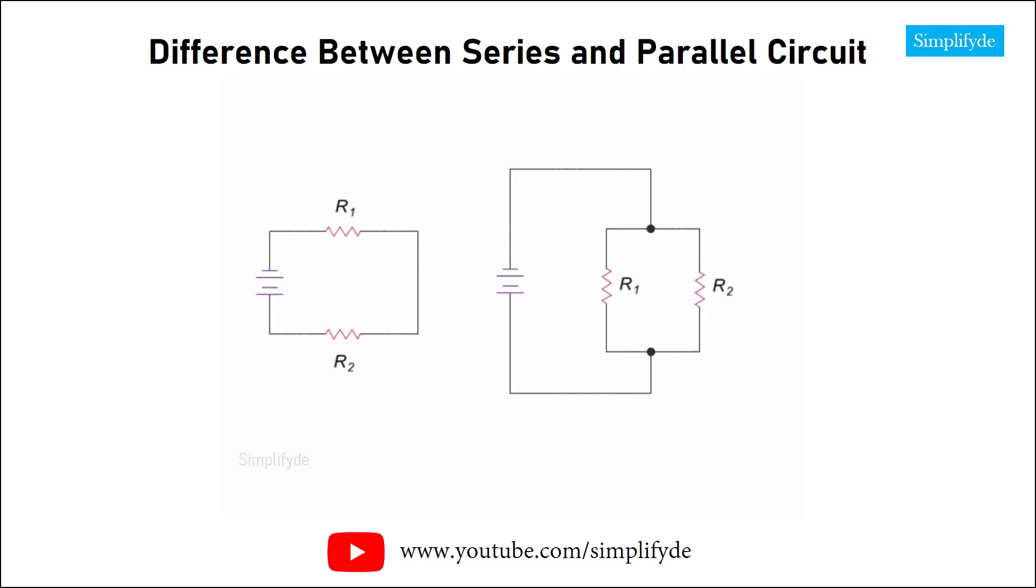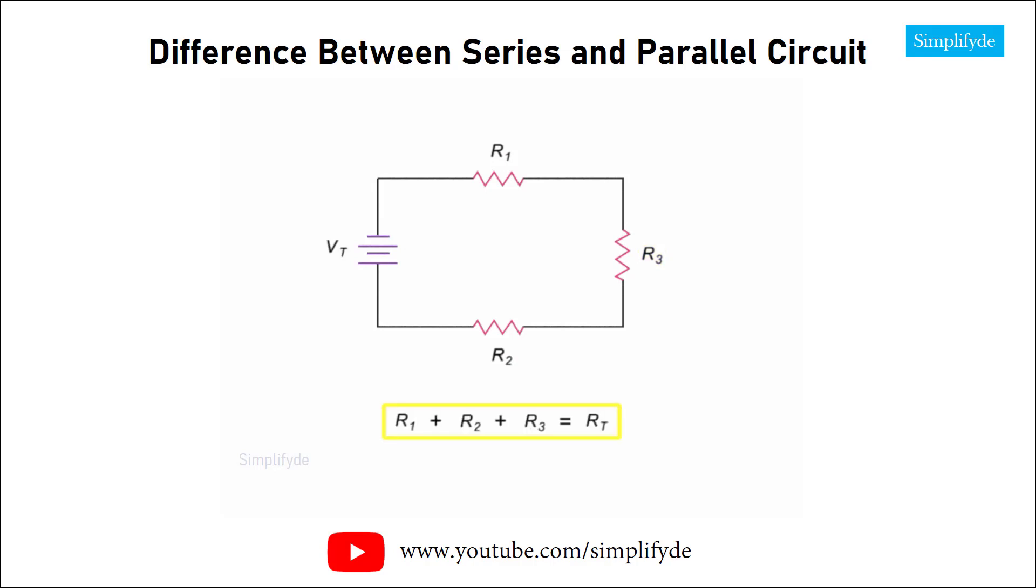Total resistance in series and parallel circuits can be determined using basic equations. The total resistance of load resistors R1, R2, and R3, shown here in series, can be determined by simply adding their ohms values together.